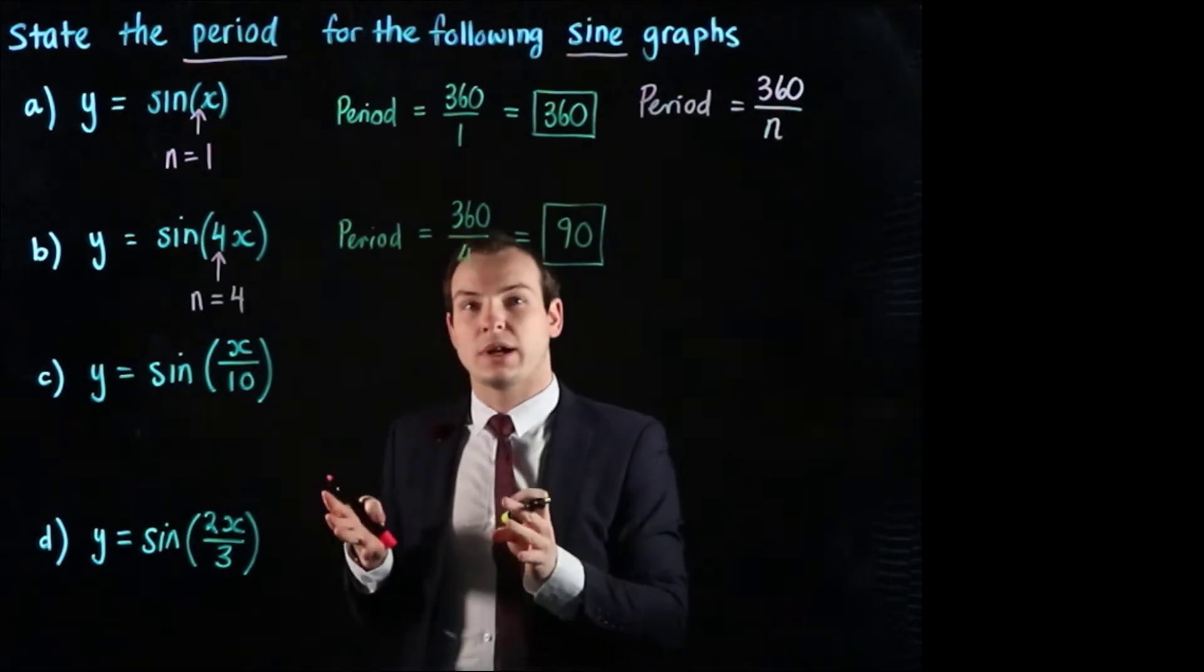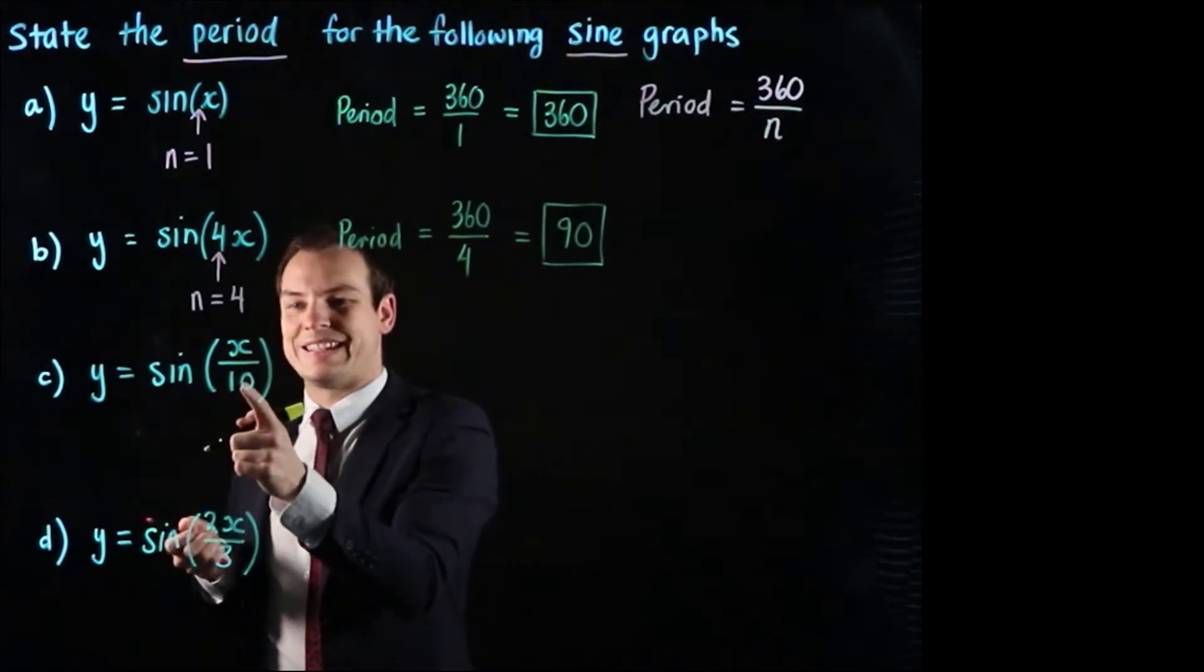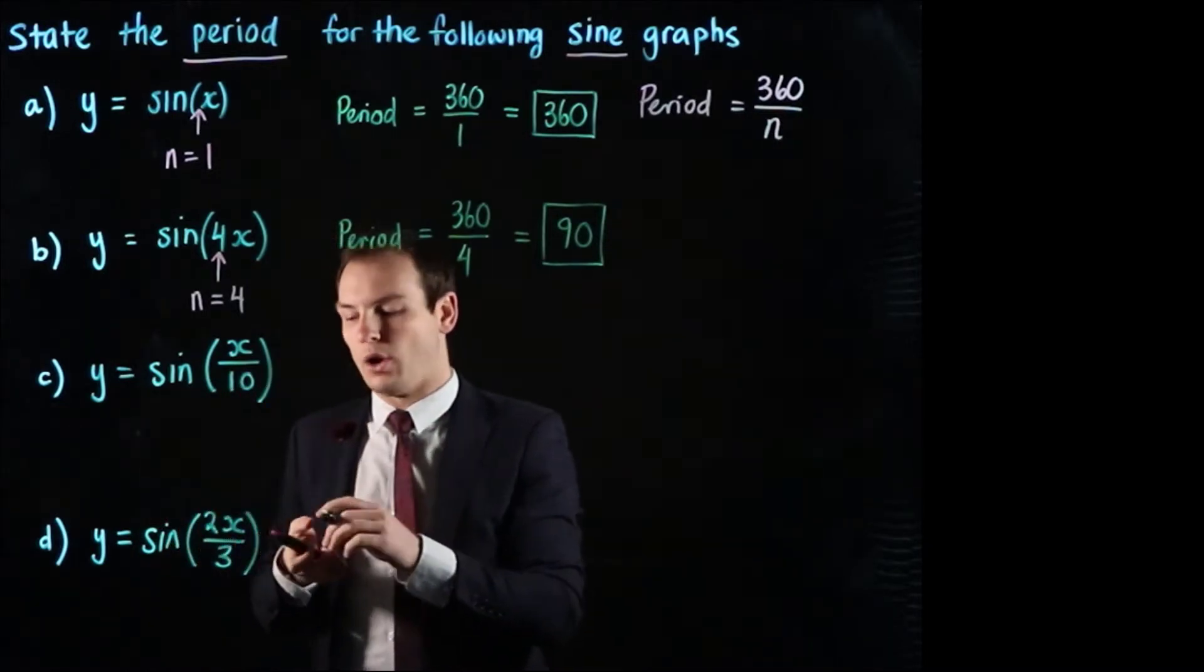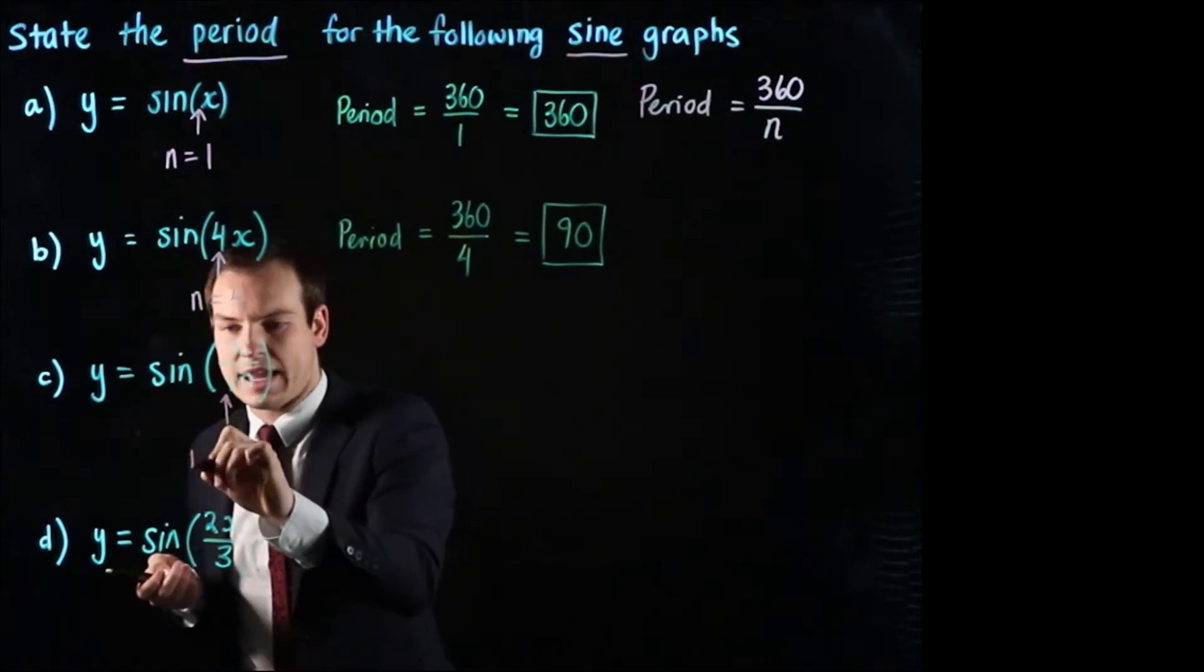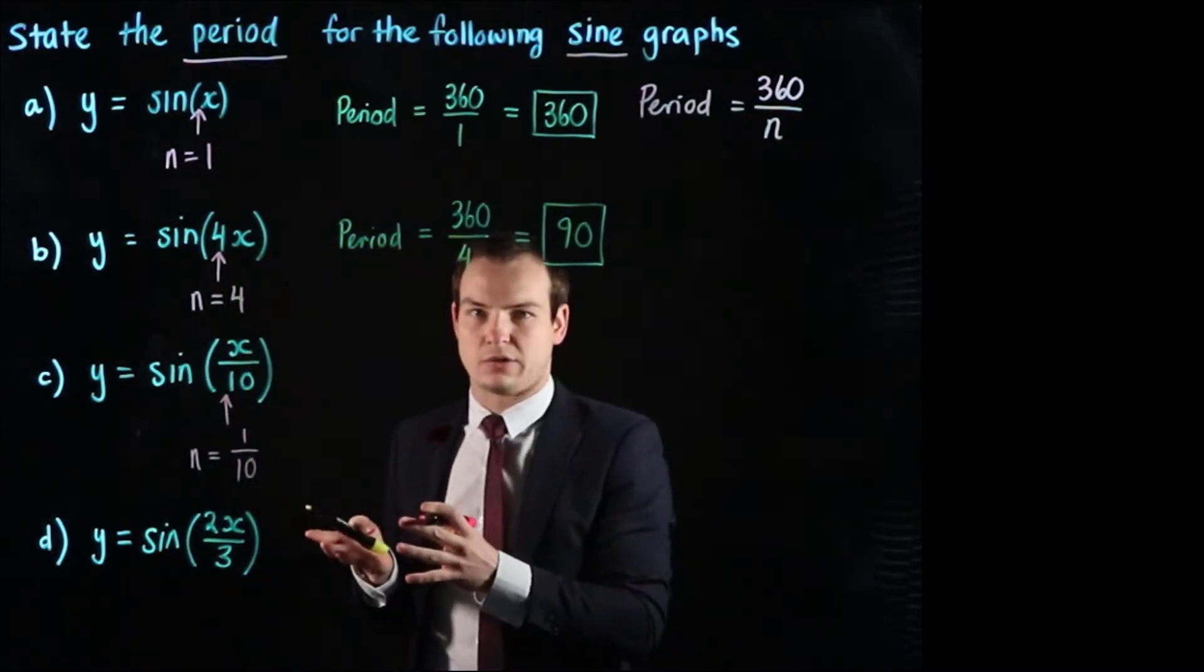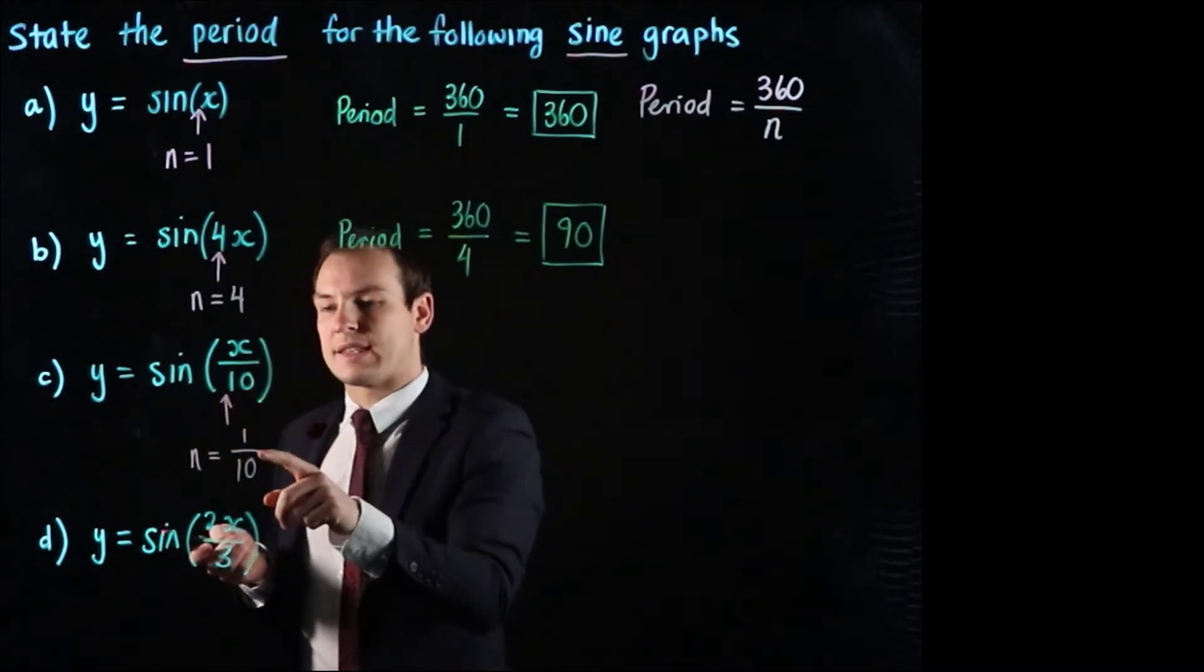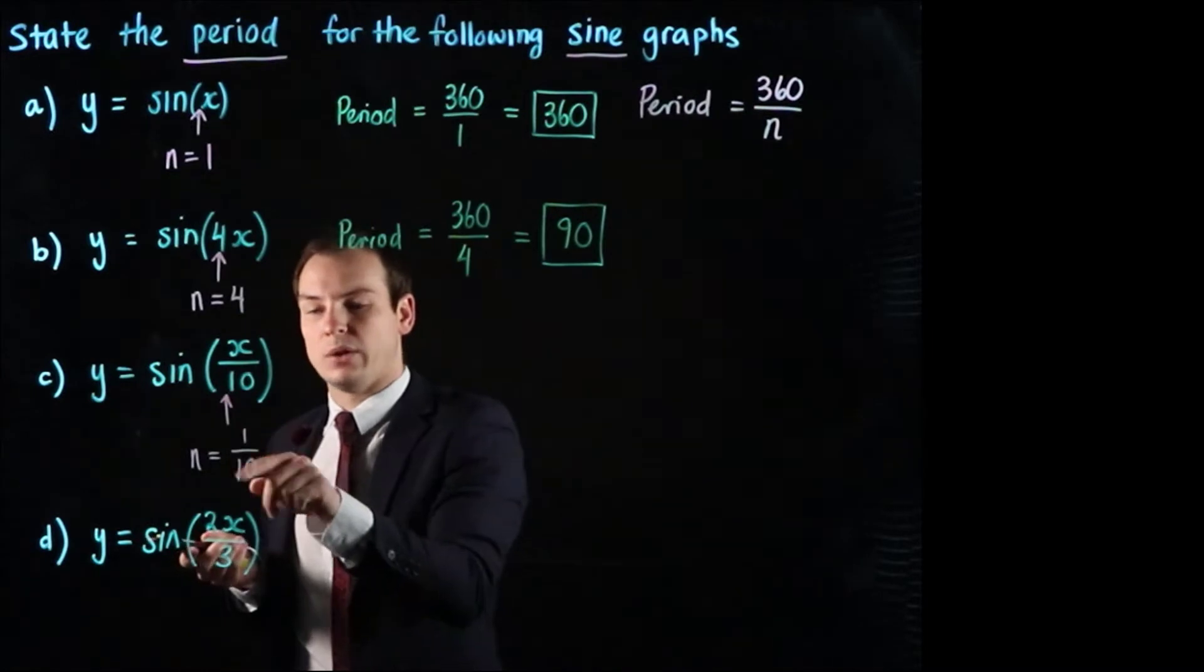For part c this is where it gets a little bit tricky because 1 is multiplying x and 10 is dividing it which means that the n value is 1 over 10. So for this we can say that n is equal to 1 over 10. So that's the n value for this particular graph. So just to run through that, sine of x over 10 is the same as 1 over 10 times x. So the n value is 1 over 10.